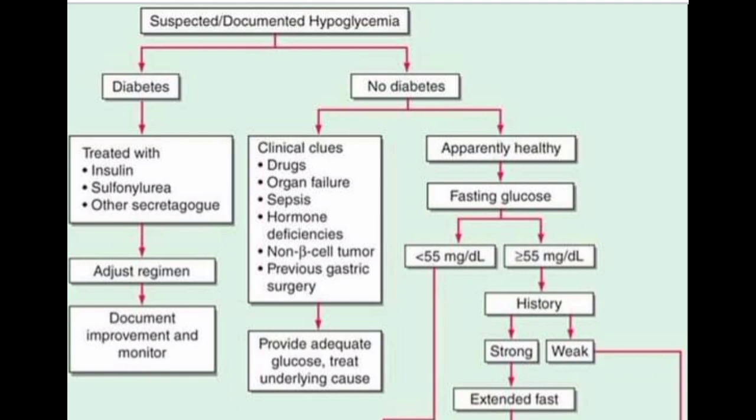For non-diabetic patients, we do two things. First we use clinical clues — for example, besides insulin, many other drugs lower sugar levels. We also rule out organ failure, sepsis, hormone deficiencies, and non-beta cell tumors, which can also cause low sugar levels. Sometimes patients may have had gastric surgeries due to which carbohydrates are not absorbed from the stomach. We provide adequate glucose and treat the underlying causes.